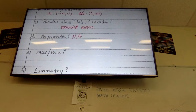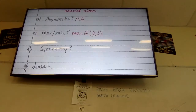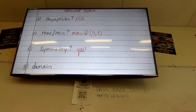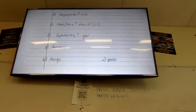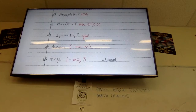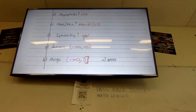Do we have any maxes or mins here? Yes — max at zero comma three. Is there any symmetry? Yes. Domain would be negative infinity to positive infinity, and the range would be negative infinity to three with a bracket at three, since there's a point at three.